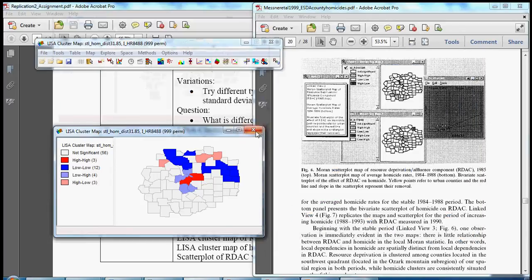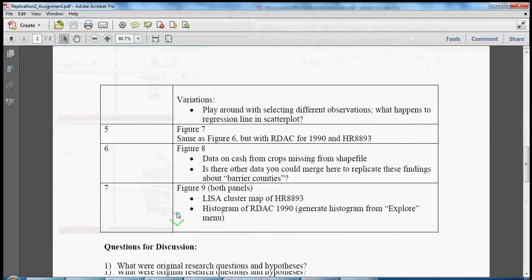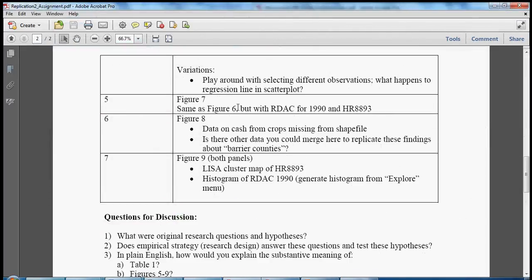Let's close these windows and go to our fifth replication item, which is same as figure six but with two different variables. Now we'd be going to resource deprivation 1990 and homicide rates from 88-93. I won't do this replication here since it's mechanically exactly the same as the previous one. Also we can't replicate figure eight because the data on cash from crops is missing from the shapefile.